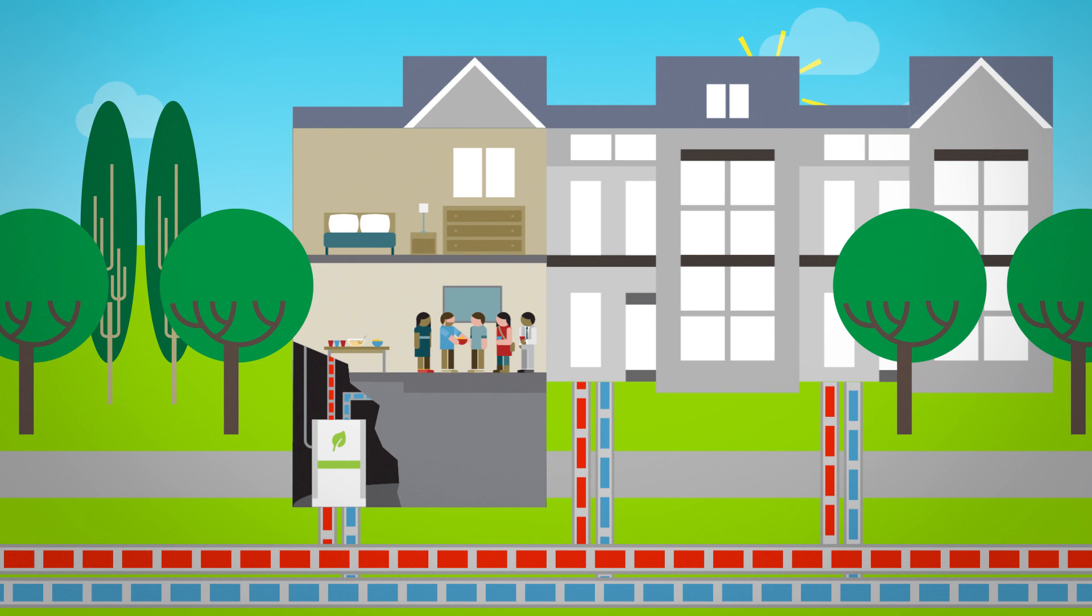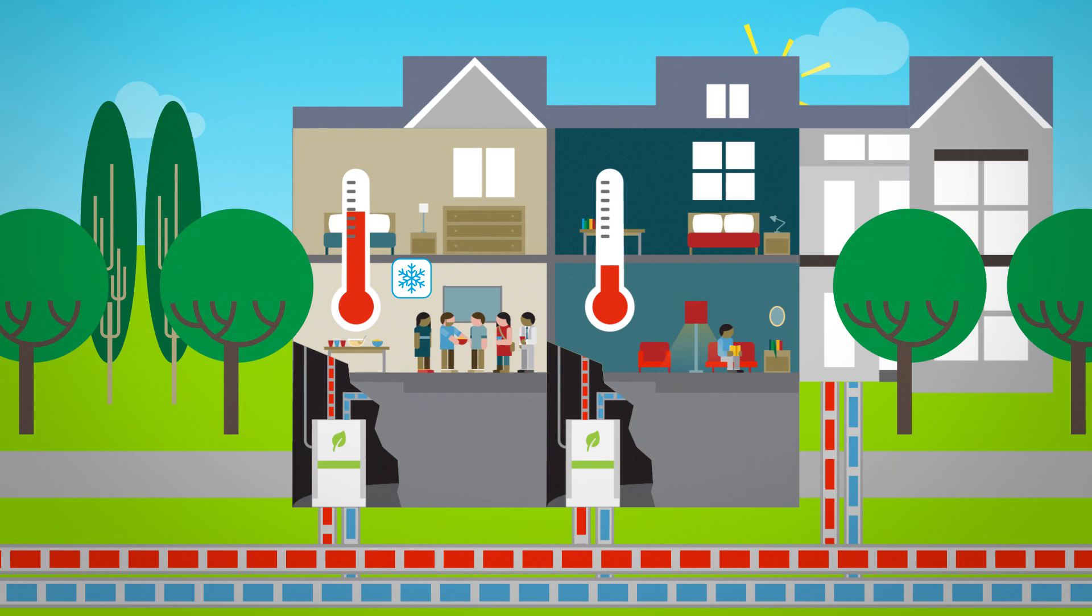People living in one townhome are having a party. With all the extra people in the home, the temperature rises, so they turn the system to air conditioning mode.